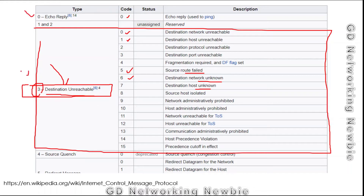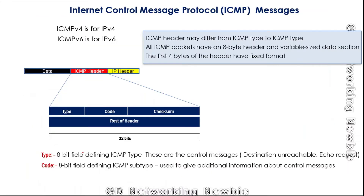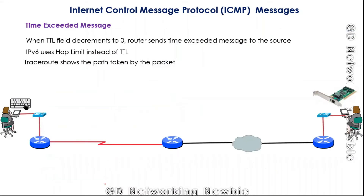There are various ICMP messages including echo request, destination unreachable, and source quench. A useful reference for all ICMP messages is the Wikipedia page linked in the video. The last field in the fixed header is the checksum field, a 16-bit field used for error checking — it detects errors but does not correct them.